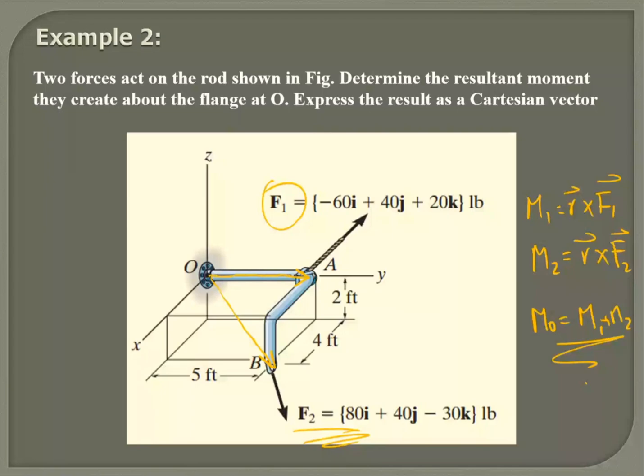Sir, it's coming out to be 30i minus 40j plus 60k. Okay. Anyone else getting this answer? Tell me the x component. Now what's the x component, value of x component?